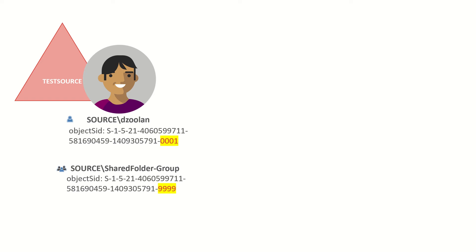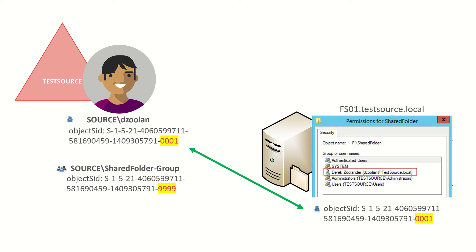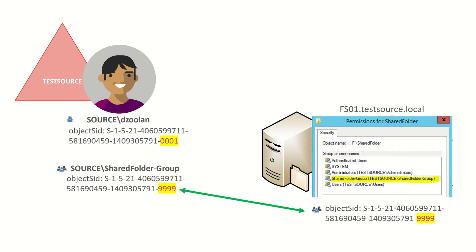When Derek wants to access some files on his server he needs to have permissions allowing him to do so. We can see in this example that Derek's user object has permissions to this folder. Under the hood, the Derek Zoolander account is a friendly name associated with the account represented by Derek's SID. In most environments we don't grant access using individual user accounts — instead we use security groups, and the same principles apply to both users and groups.